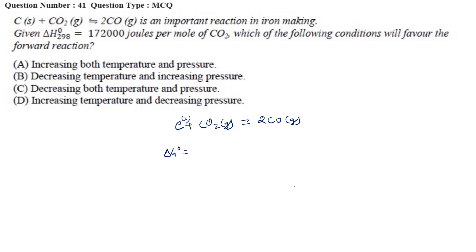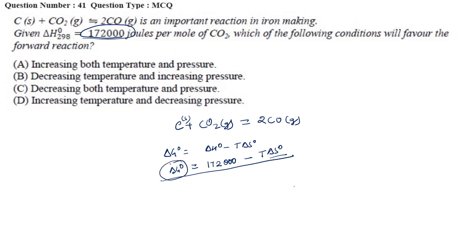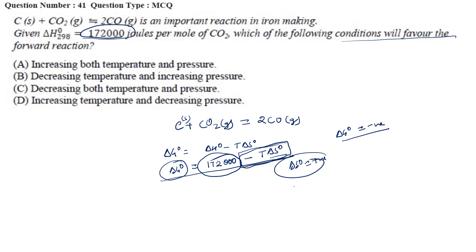We know ΔG⁰ = ΔH⁰ − TΔS⁰. For the reaction to be favored, ΔG should be negative. ΔH⁰ is a positive term (endothermic reaction), so the TΔS⁰ term has to be large enough to make the overall ΔG⁰ negative. That means ΔS⁰ should be positive and T should be high so that the T·ΔS⁰ term exceeds ΔH⁰ in magnitude.